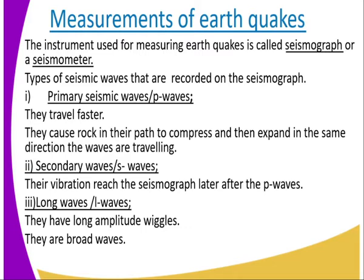The waves are: primary seismic waves, which we refer to as the P waves; then we have the secondary waves, which we refer to as the S waves; and we have the long waves, which we refer to as L waves. Let us look at their characteristics.